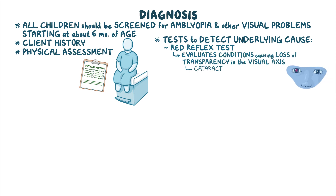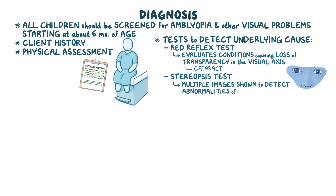The red reflex test detects conditions such as cataract. There is also the stereopsis test, during which multiple images are shown to the client in order to detect abnormalities of visual acuity, which is typically seen in clients with strabismus.